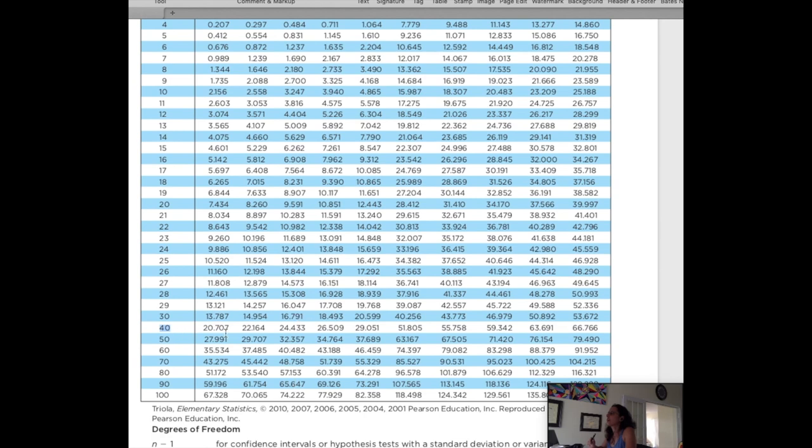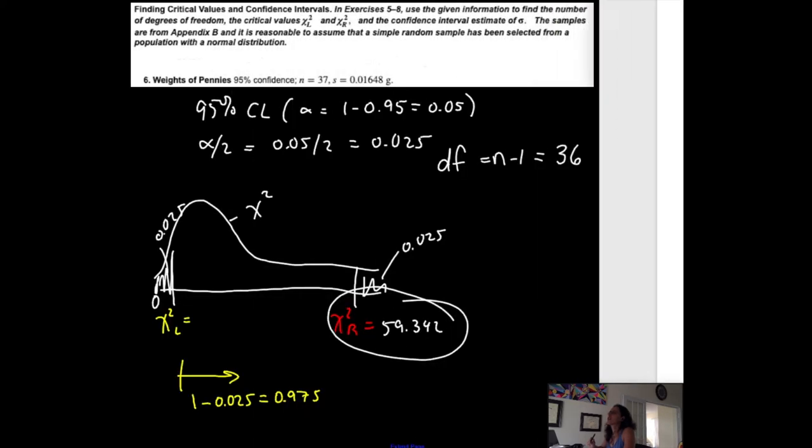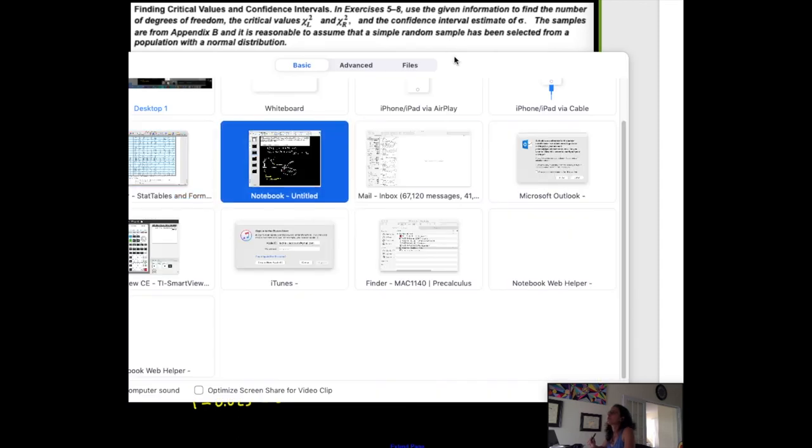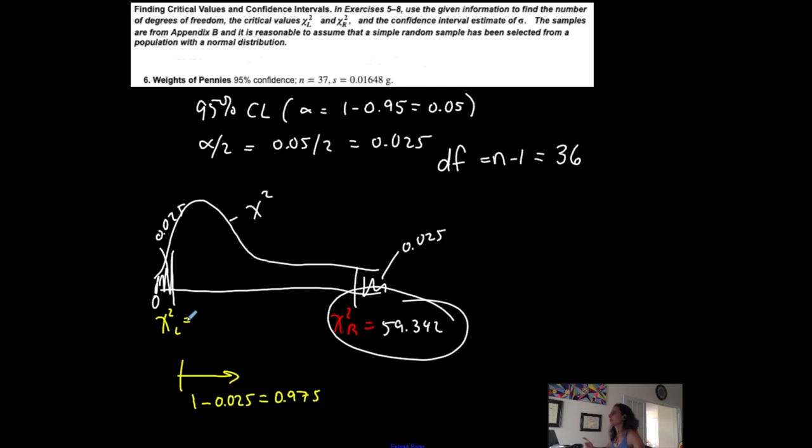So third column from the left, degrees of freedom of 40, 24.433 is my left-tailed chi-squared critical value. 24.434. And its approximate value is 24.433.